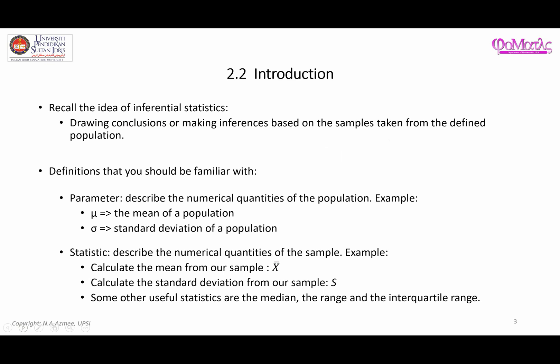Basically, if you can recall what you have seen in chapter one, which is the idea of inferential statistics — it is basically all about drawing conclusions or making inferences based on the samples taken from the target population. So the keywords here are sample and population, and we are going to take a subset of the population to work with, which is the sample.